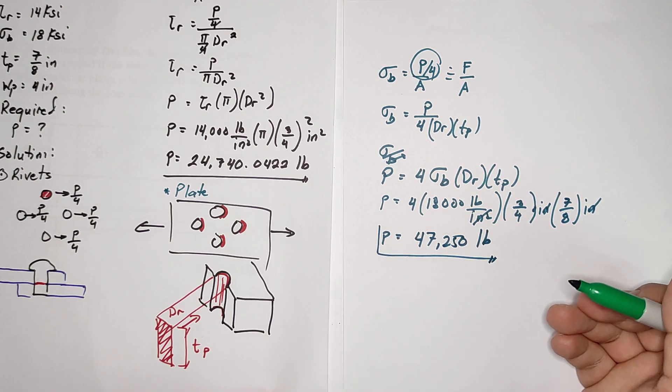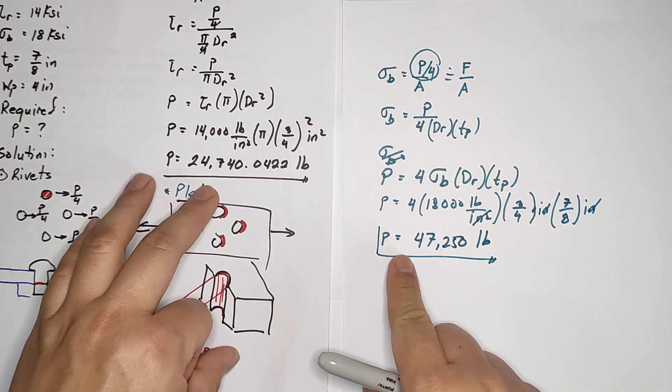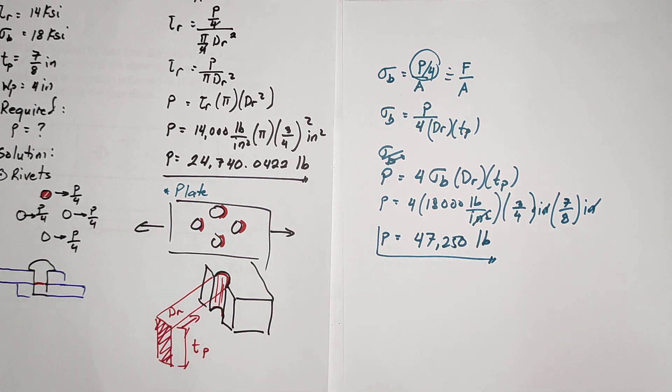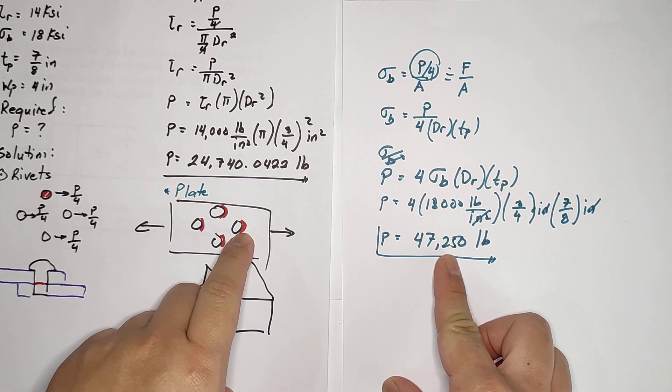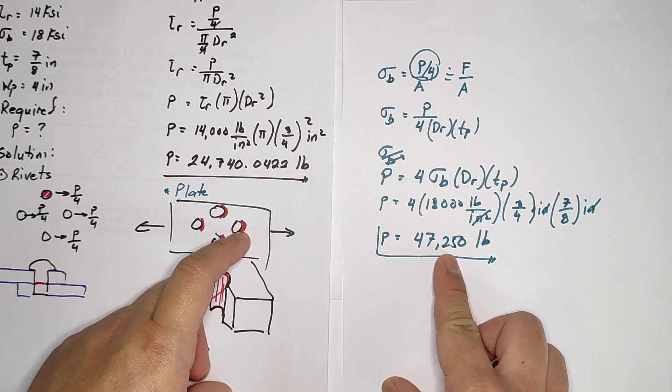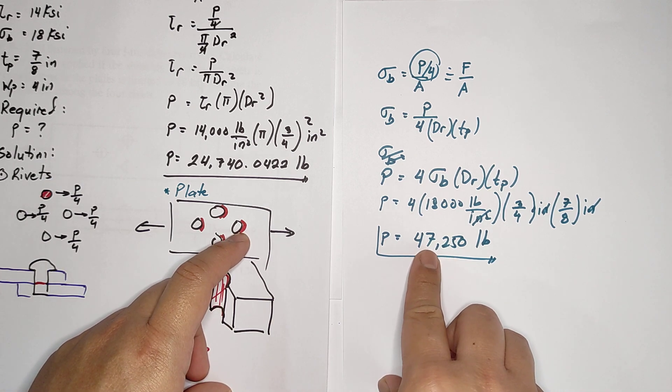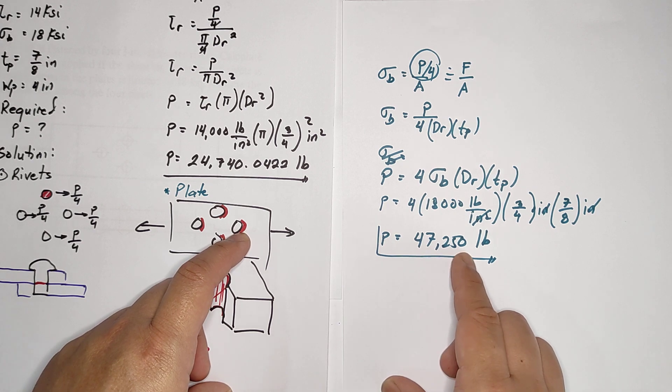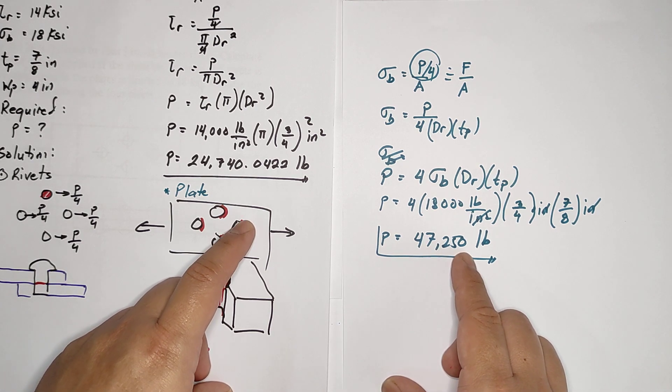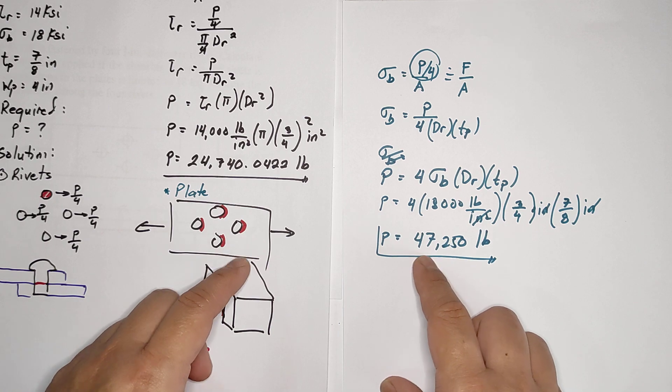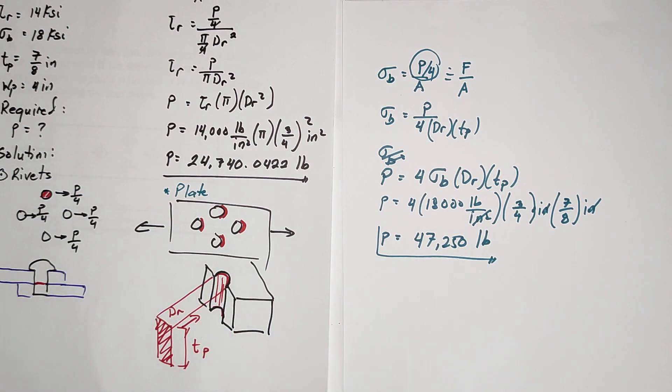Now compare the two values. To fail the plate in terms of bearing stress, you must exceed 47,250 pounds - below that you're okay. But in the rivets, you can only go up to 24,740. If you exceed that, the rivets will be sheared.